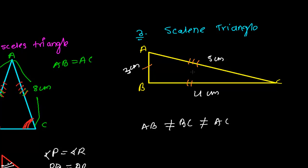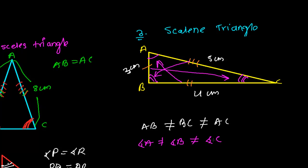Since all sides have different values, the corresponding opposite angles are also all different. Angle A is not equal to angle B, and angle B is not equal to angle C. Neither the angles are equal nor the sides — everything is different. Such a triangle is called a scalene triangle.